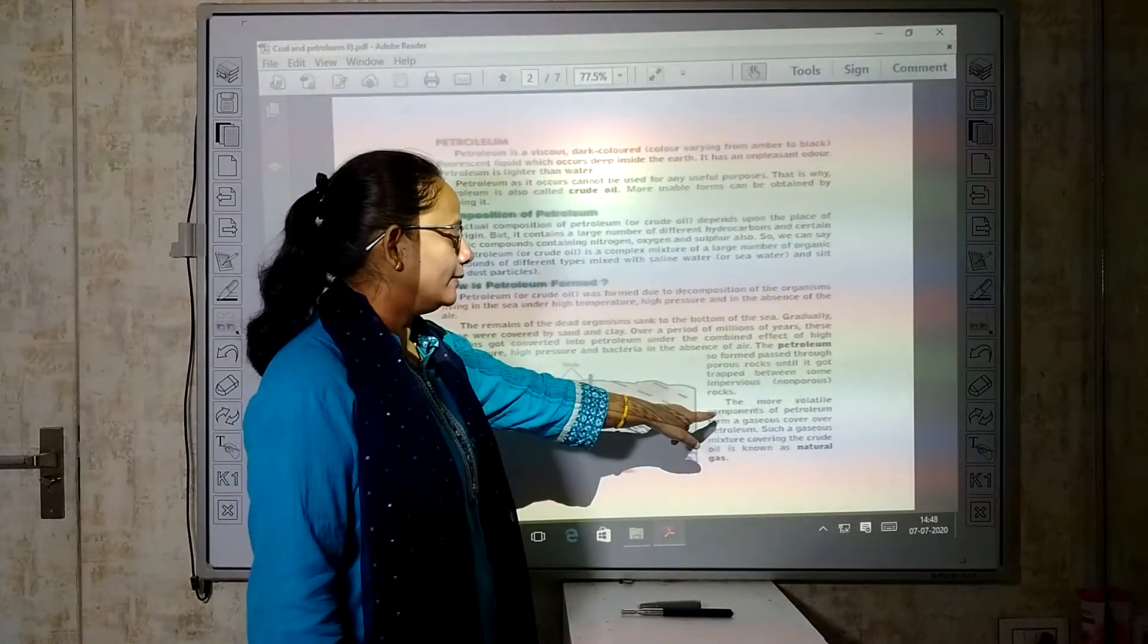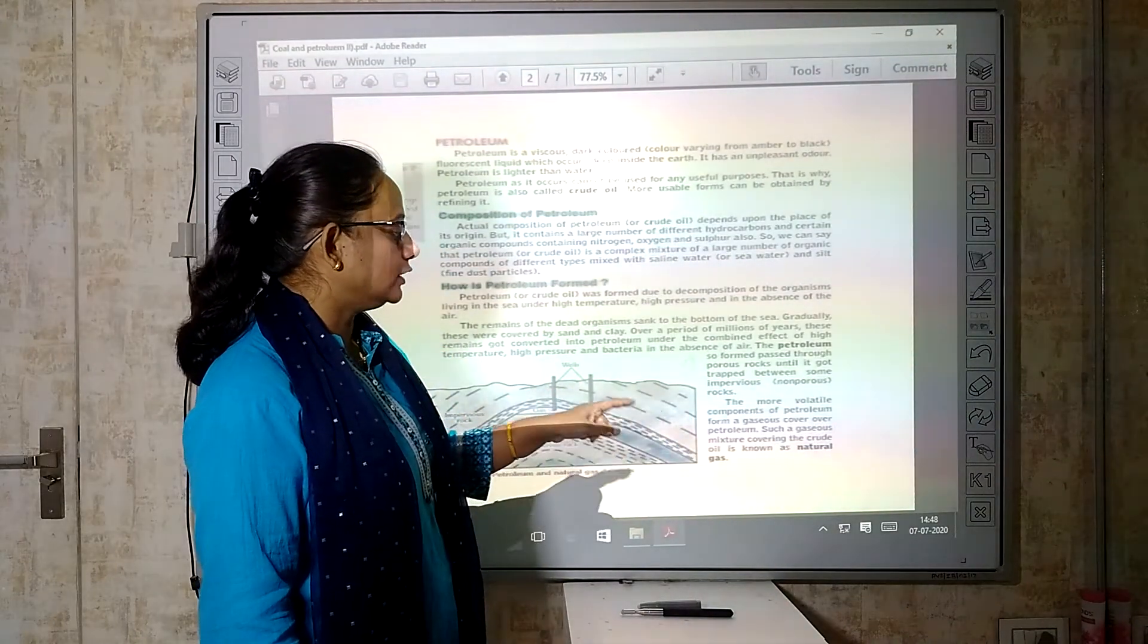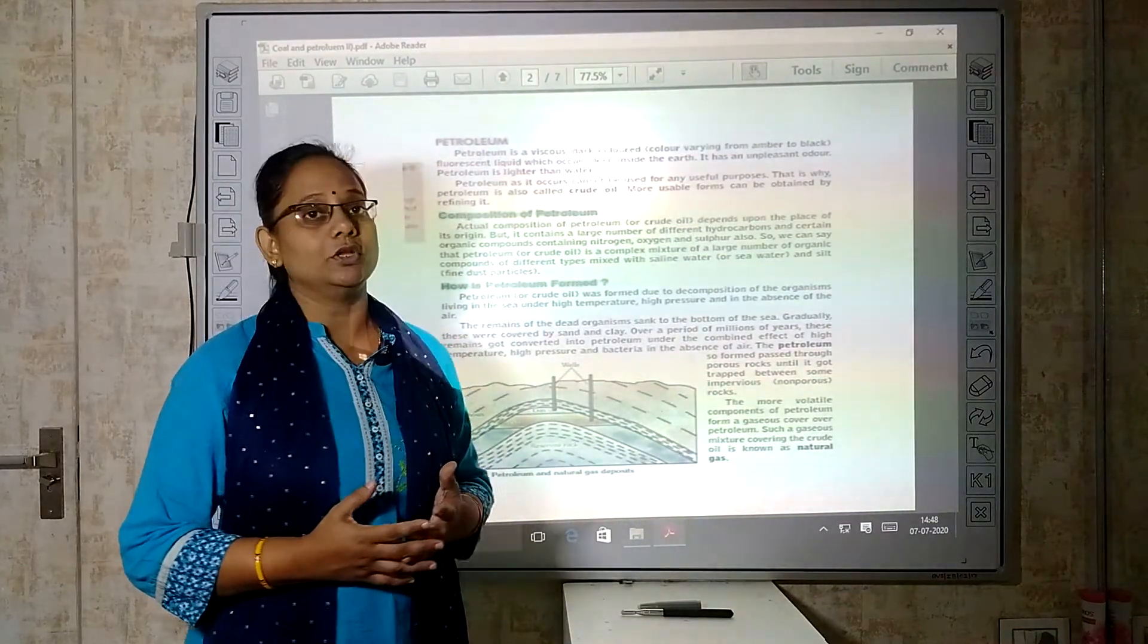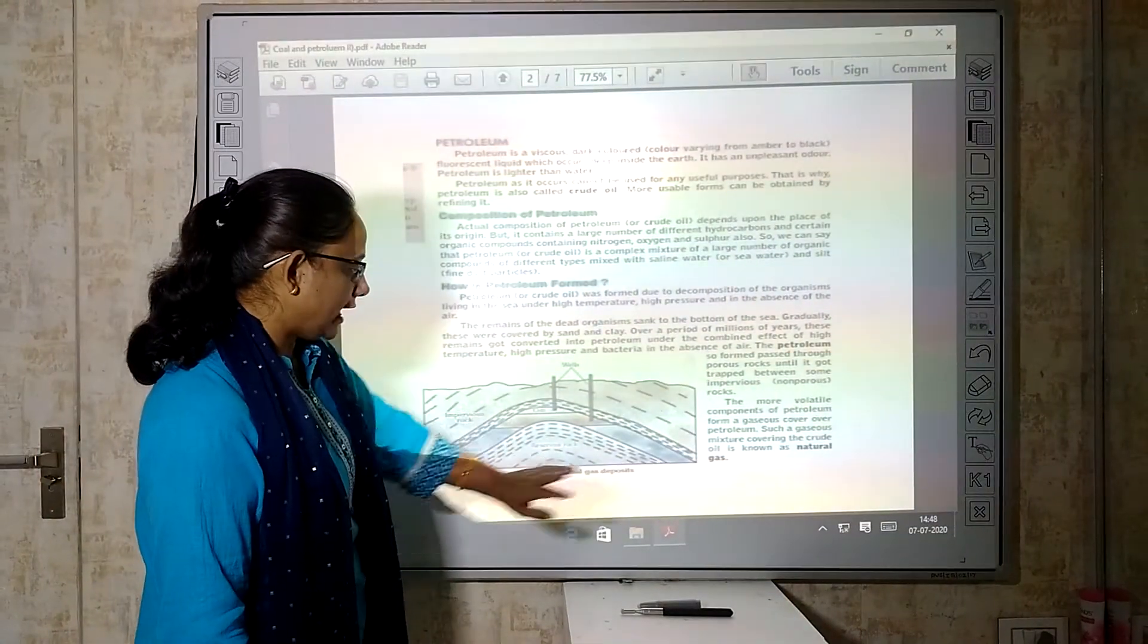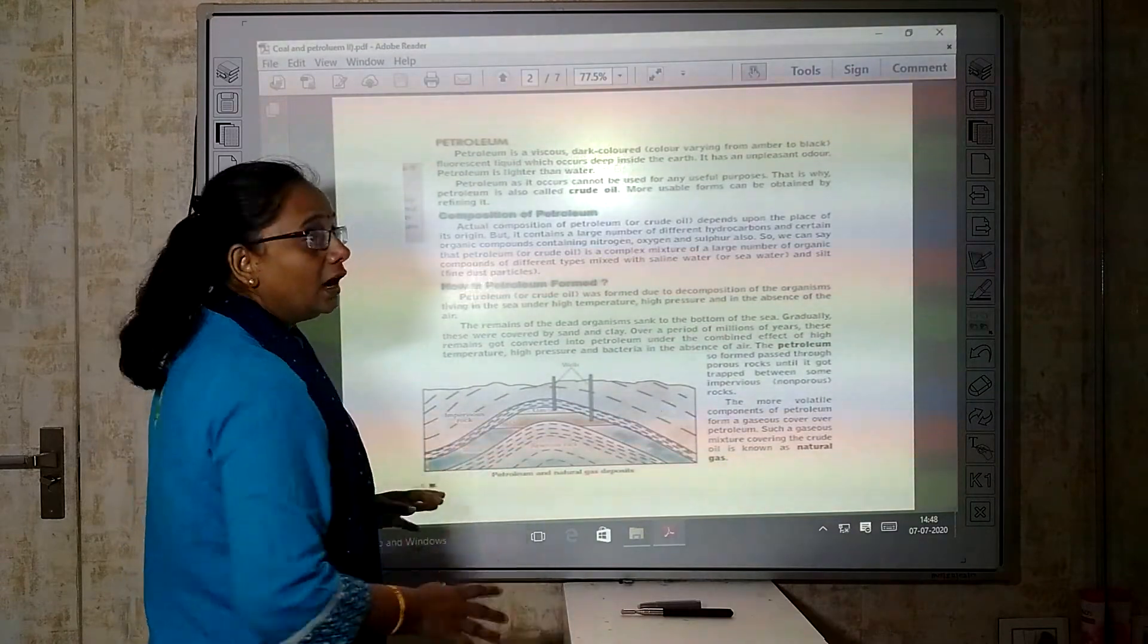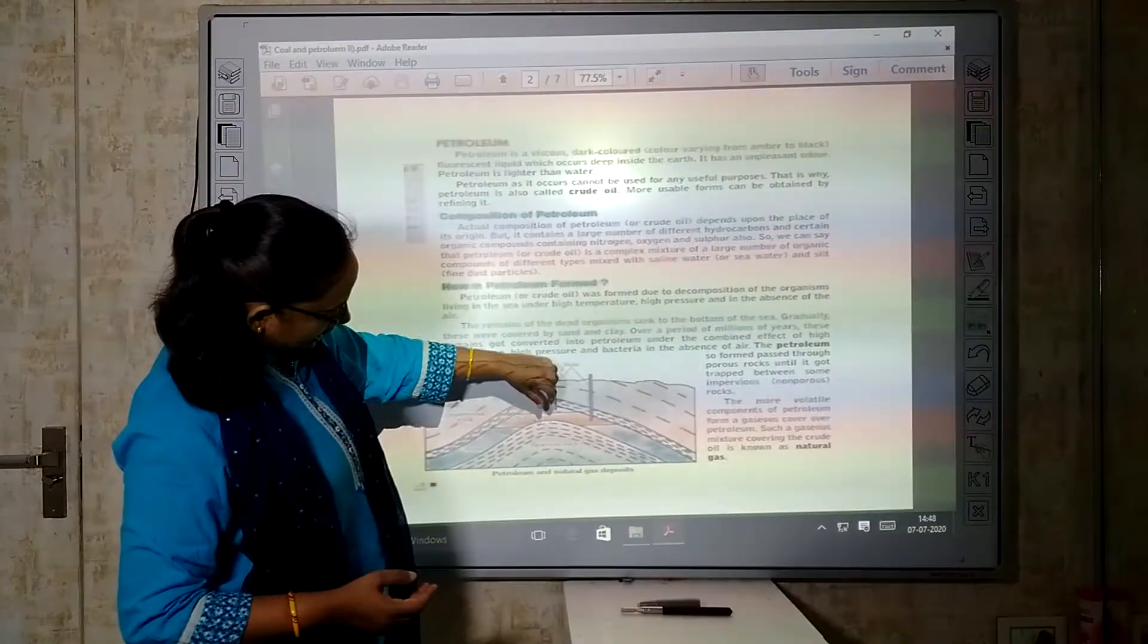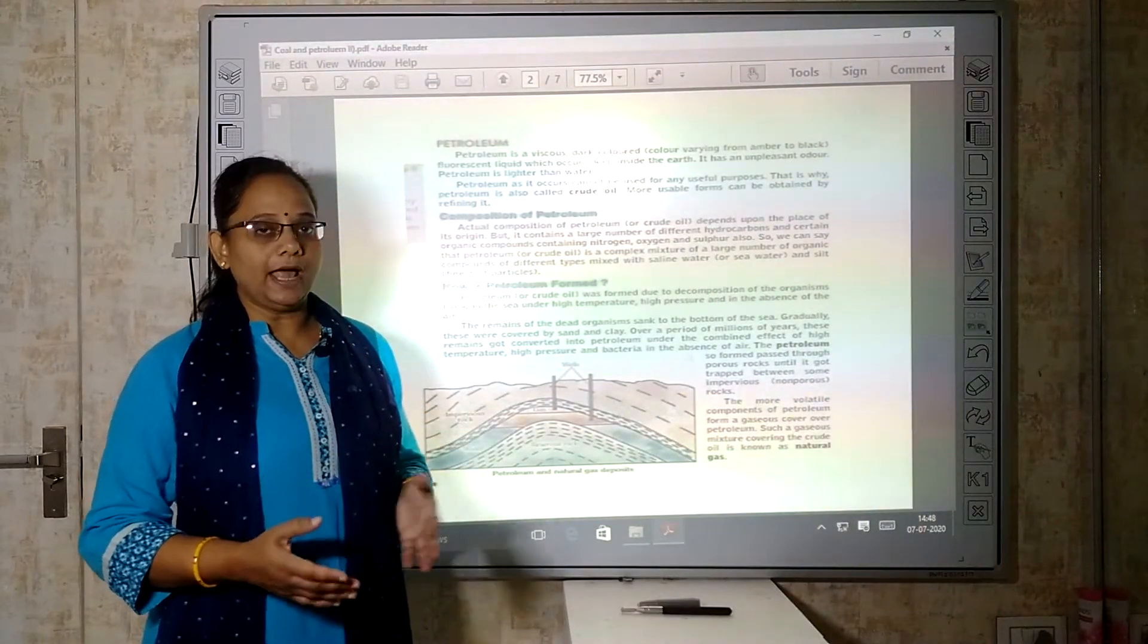The more volatile components of petroleum form a gaseous cover over petroleum. Such a gaseous mixture covering the crude oil is known as natural gas. This is the diagram of petroleum and natural gas deposit. These are the rocks, water and the porous rocks. Thus, they are formed and we pass through oil wells. With the help of machines we are able to get this oil.